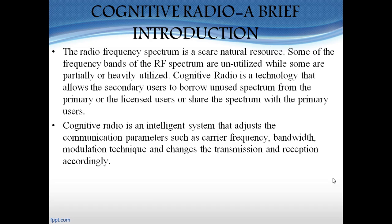Efficient use and proper allocation of the radio frequency spectrum is very important since the availability of the RF spectrum is very limited. The allocation of spectrum is controlled by government bodies of different countries, like FCC for the United States of America, and are allocated to licensed users in order to avoid harmful interference between different frequency bands. This leads to unnecessary wastage of the RF spectrum.